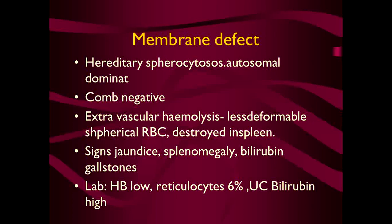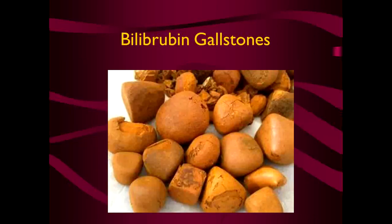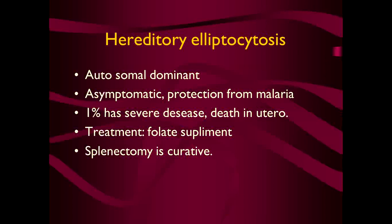The common features of hereditary spherocytosis are jaundice, splenomegaly, and bilirubin gallstones. Laboratory investigation: on CBC the patient will have low hemoglobin and reticulocytes of 5-6%; on LFT there will be unconjugated hyperbilirubinemia. These are the spherocytes — sphere-shaped with poor capability of deforming and passing through vessels, therefore they get lysed. These bilirubin gallstones are a hallmark feature of this defect.